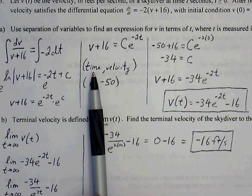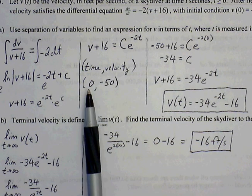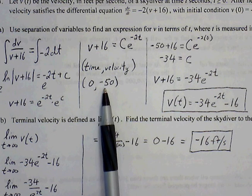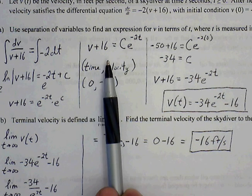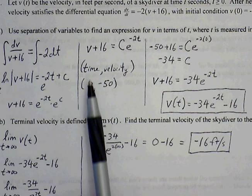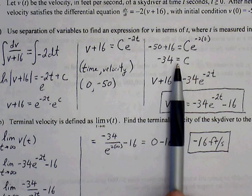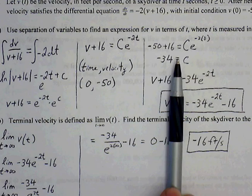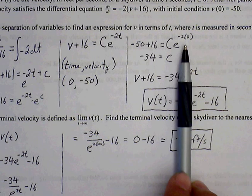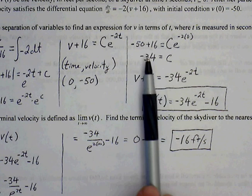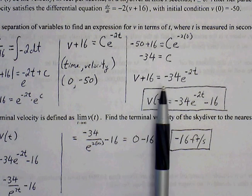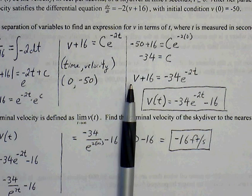Now, our independent variable is time, our dependent is velocity. We do have the initial condition, ordered pair. At time 0, the velocity is negative 50, so we can use this information to plug in and solve for c. Negative 50 plugs in for v, 0 plugs in for t, so we get negative 50 plus 16 is equal to c times e to the negative 2 times 0. E to the 0 is simply going to be 1. Negative 50 plus 16 is negative 34, so our c value is negative 34.